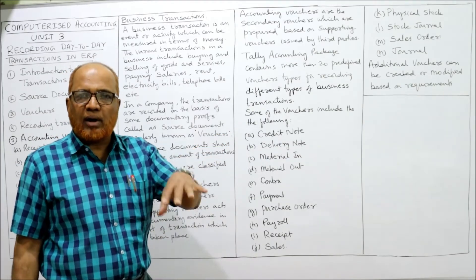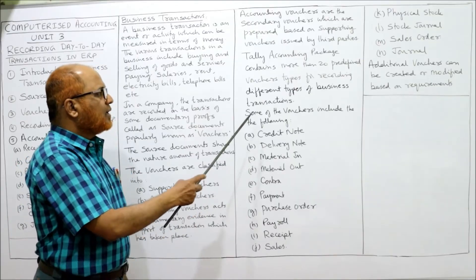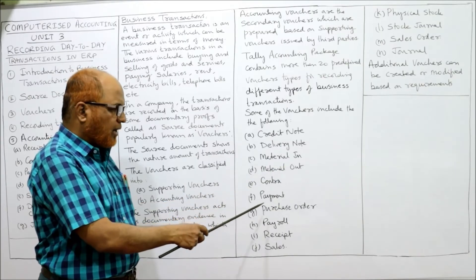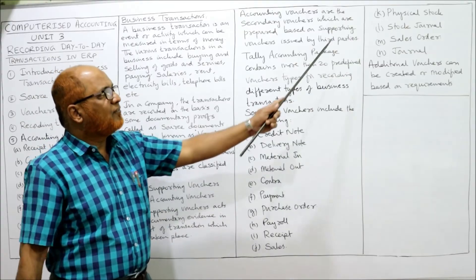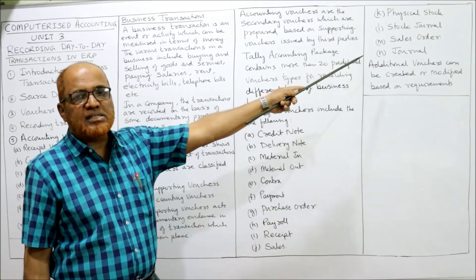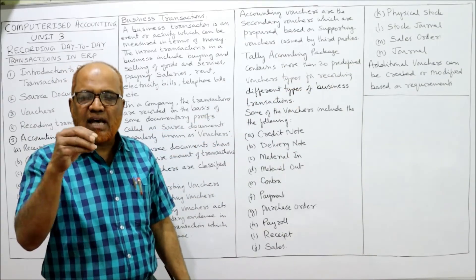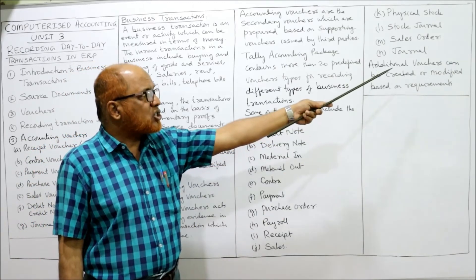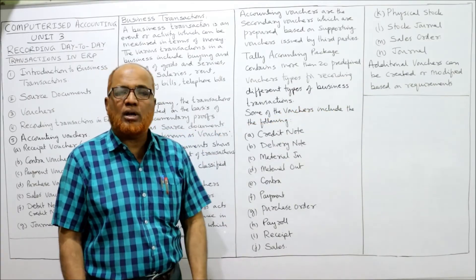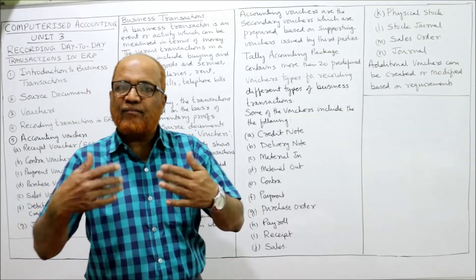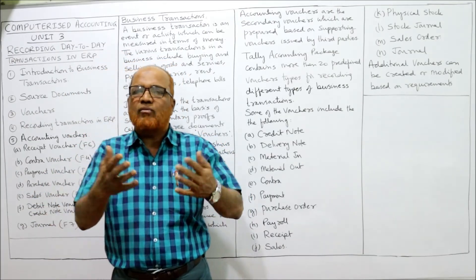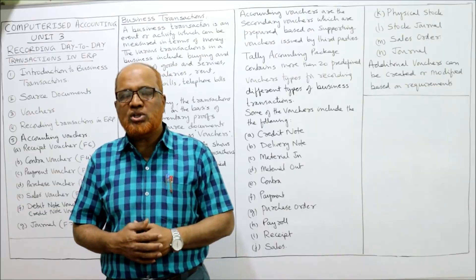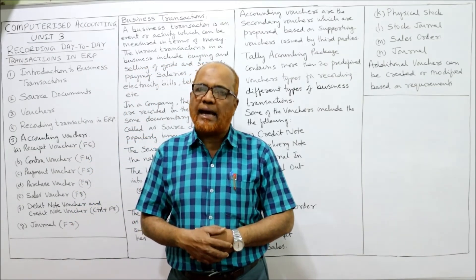The different vouchers already available in the Tally package include: credit note, debit note, delivery note, material in, material out, contract, payment, purchase order, payroll, receipts, sales, physical stock, stock journal, and sales order journal. These are examples of pre-defined vouchers given in the Tally package. Apart from these, additional vouchers can be created or modified based on business requirements. A business can create additional vouchers according to its own requirement and can also modify the existing vouchers. This is a key feature of the Tally accounting package.